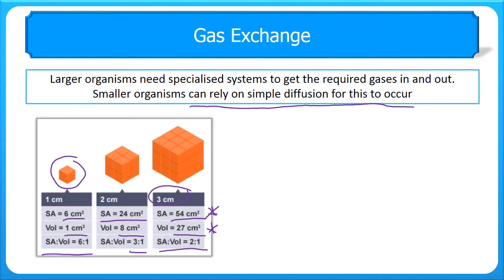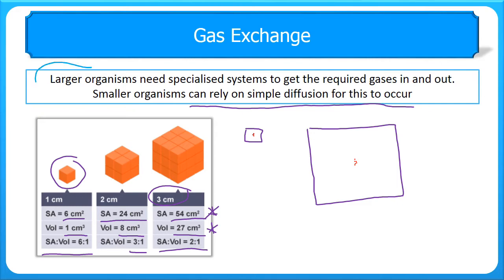If you imagine the small cube, in order to get to the centre where some cells might be, there is a relatively short distance the gas has to travel. When we have larger cubes and there are cells in the middle, this distance from the outside is much greater. So larger organisms need a specialised system in order to get the gases into those cells for their cellular processes.